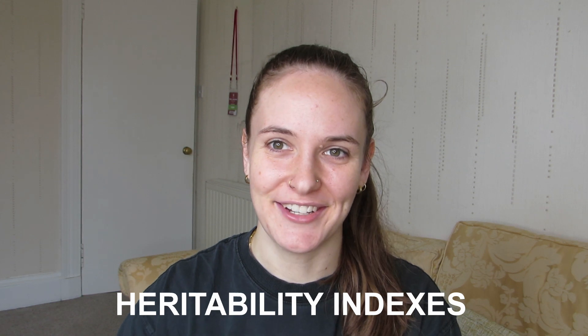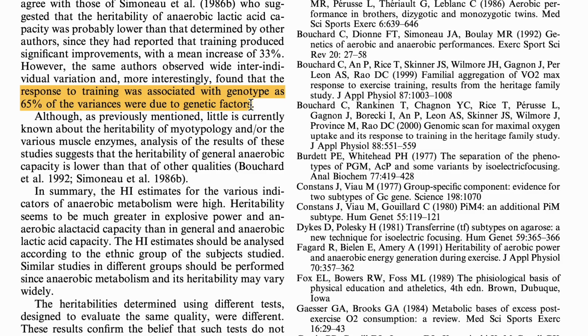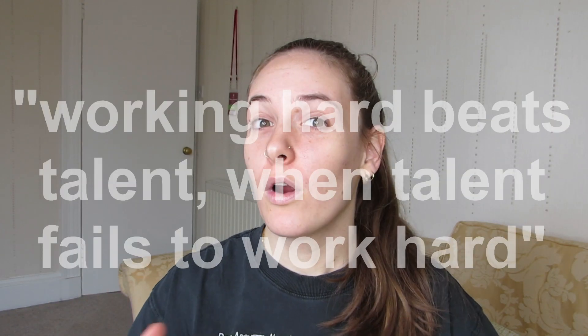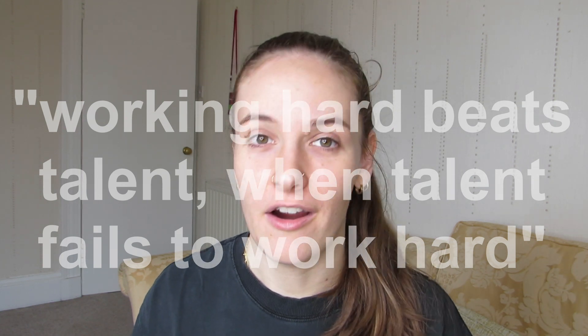As it turns out, there does seem to be a high degree of heritability in strength and responsiveness to training. Looking at a table of heritability indexes, we can see that explosive power and glycolytic capacity have quite a high heritability index. However, because this index is not at 1.0 or 100%, it indicates that environmental factors may still be able to modulate the outcome. This means that although we can certainly get a boost from our genetics, we also have to train hard and put in the work — otherwise we'll never capitalize on that genetic advantage. This reminds me of the saying: 'working hard beats talent when talent fails to work hard.'